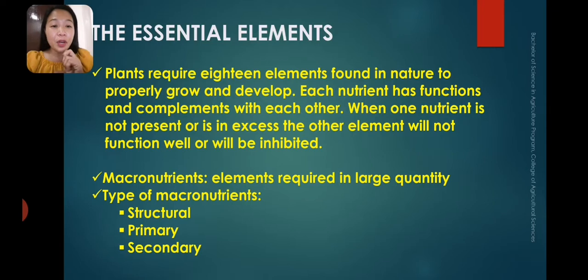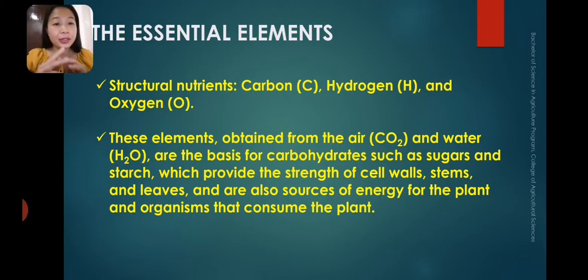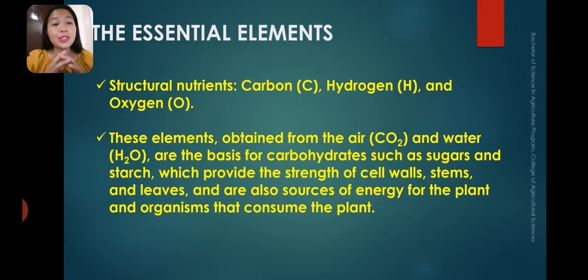Macronutrients are further classified into three types: structural, primary, and secondary. Structural nutrients are composed of carbon, hydrogen, and oxygen — elements found in air and water. They are obtained from carbon dioxide (CO2) and water (H2O), and they form the basis for carbohydrates such as sugars and starch, providing strength for cell walls, stems, and leaves, and serving as energy sources for the plant.